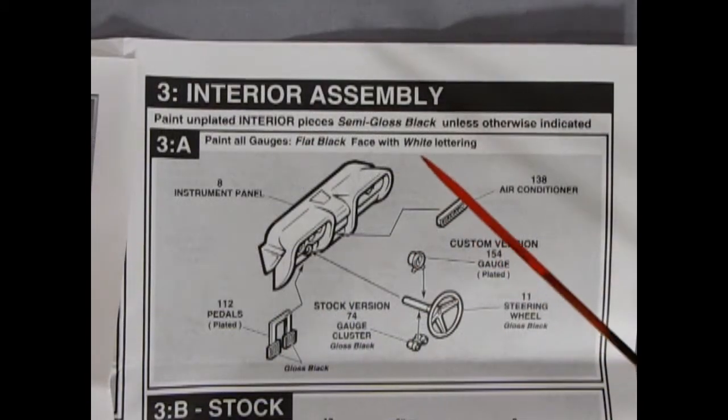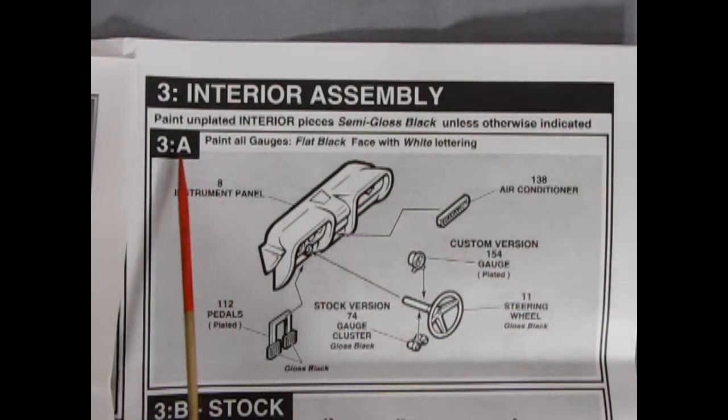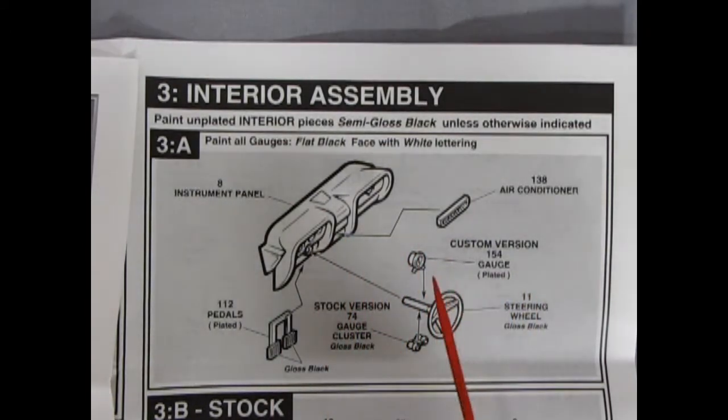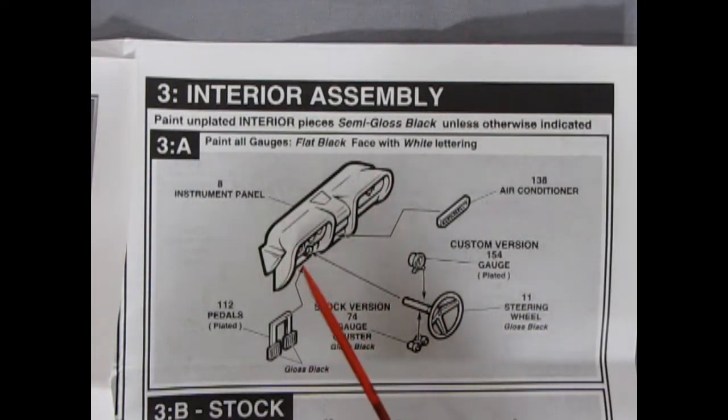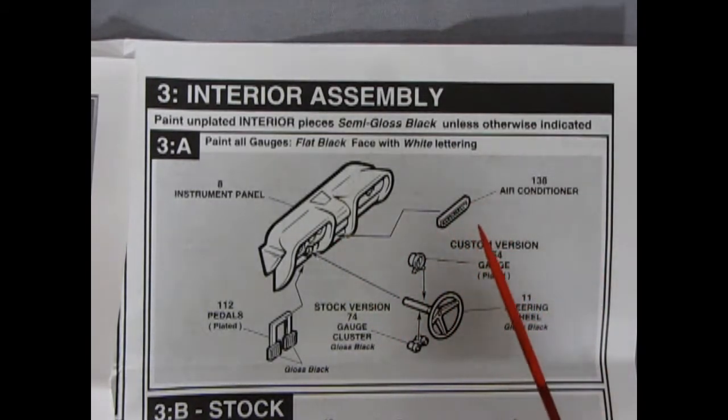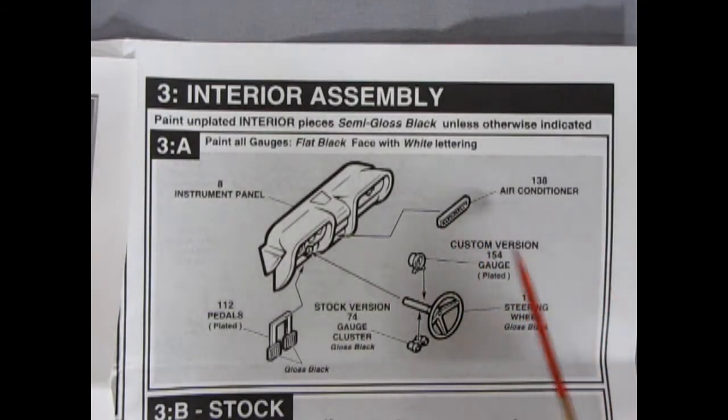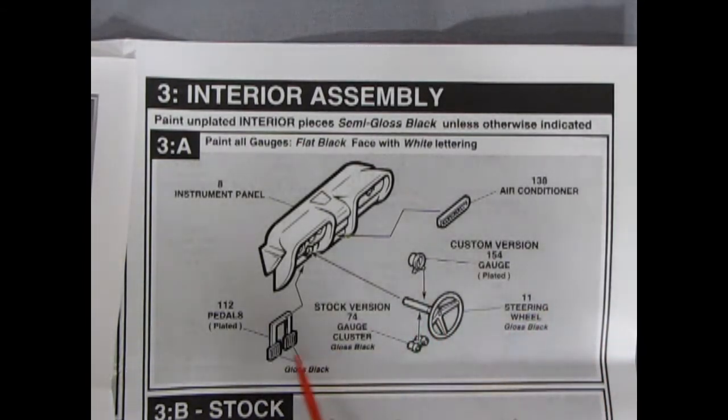Panel 3 is showing the first part in our interior assembly. It says paint unplated interior pieces semi-gloss black unless otherwise indicated. And you can also look up your Mustangs here to see what type of interior you like. So we've got our nice dashboard here with the dual pods. The air conditioner unit glues in there if you want it, because remember, you have a car that may or may not have the air conditioning. There is, in the custom version, we've got our tachometer gluing onto the steering wheel. And then there's a cluster of other gauges. These are the stock version, which are gluing underneath the steering column. And then the steering wheel and, of course, our two pedals going on here. One for clutch, one for brake.